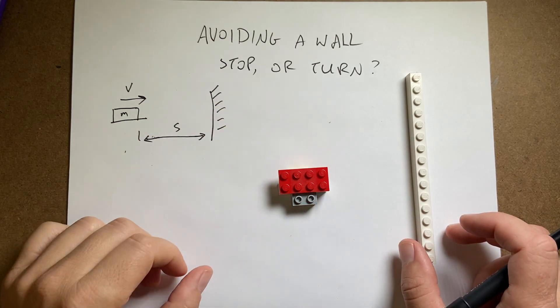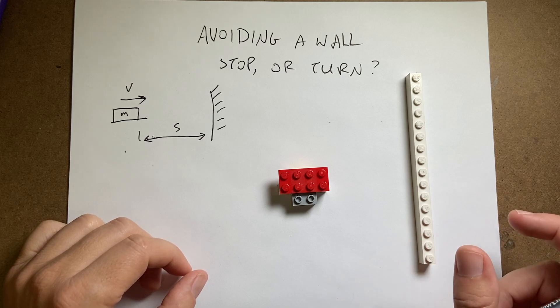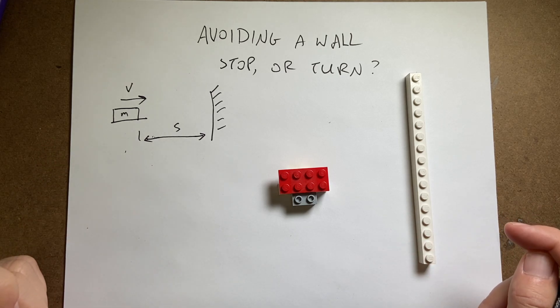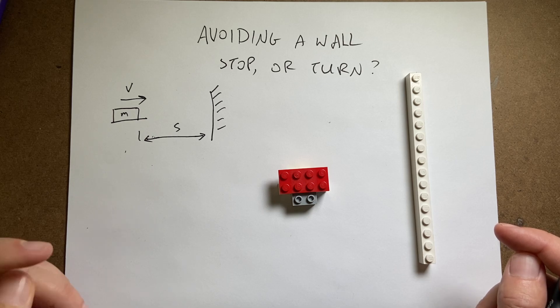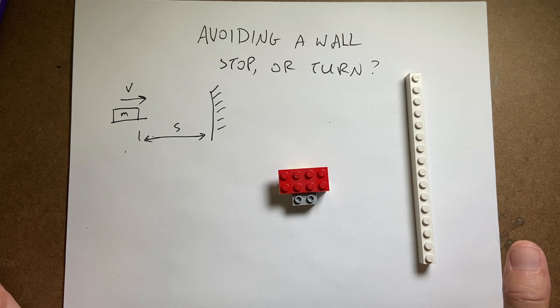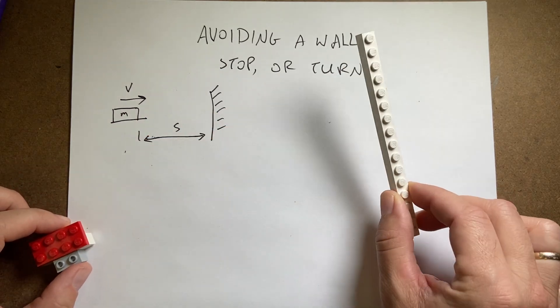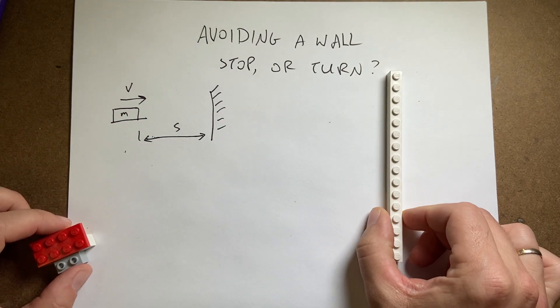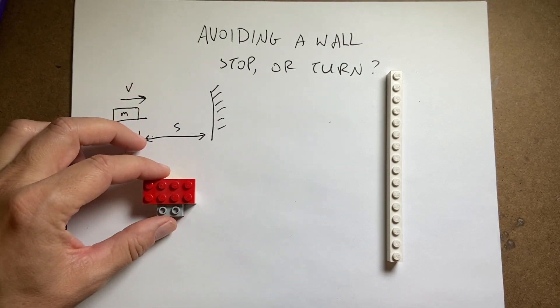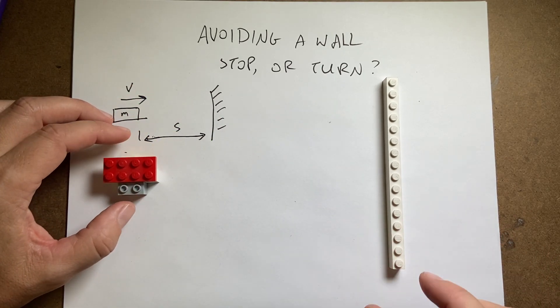All right, so this is an interesting physics problem. I actually found this in a book, I think it was called The Flying Circus of Physics. It had just a whole bunch of cool problems in it. So here's the situation. I have a wall. This is just a piece of Lego. It's not actually a wall. Well, it's kind of a wall. And then I have a car.